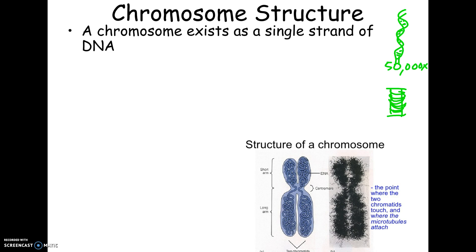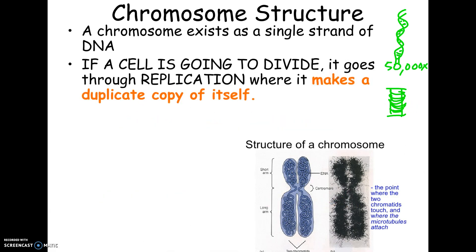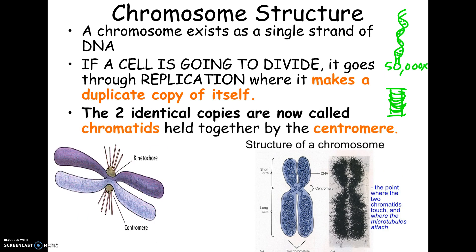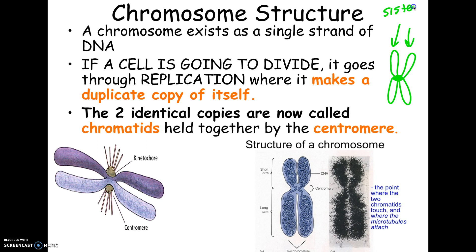Technically, if you were to unwind it, one side of a chromosome would be one strand. Chromosomes don't look like X's until the DNA makes a copy of itself. The two sides of a chromosome are exactly identical to each other — they're called chromatids, and what holds them together is the centromere. They're usually called sister chromatids because they are exactly identical.